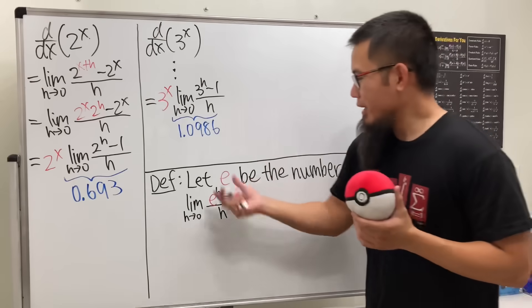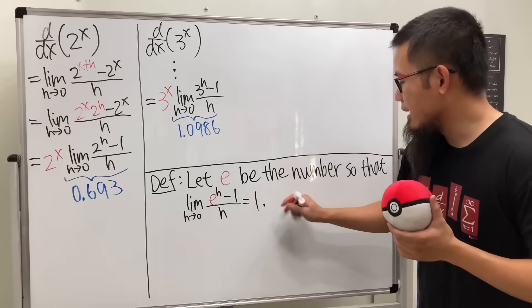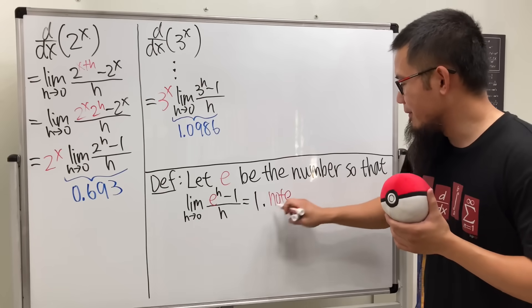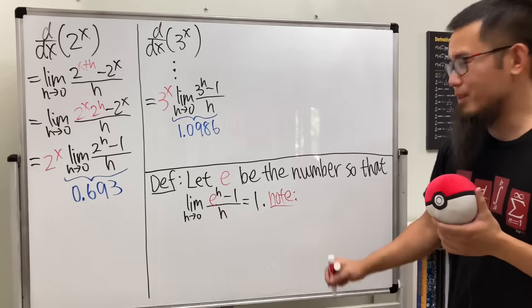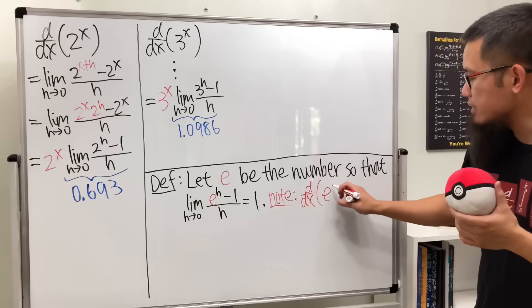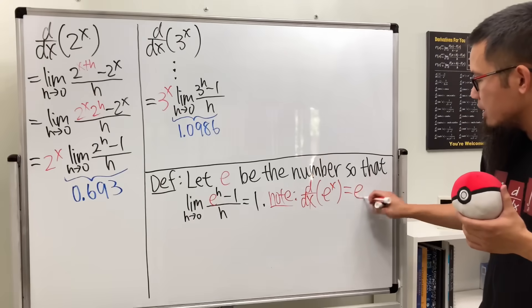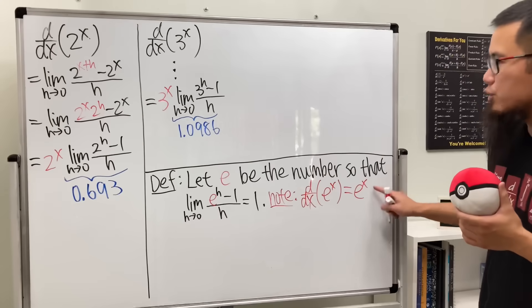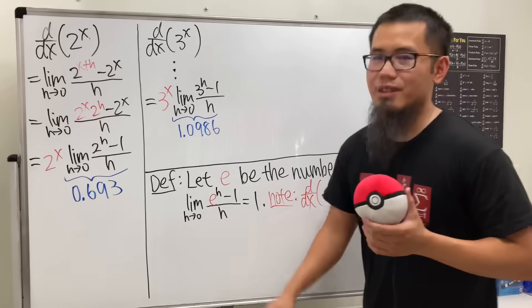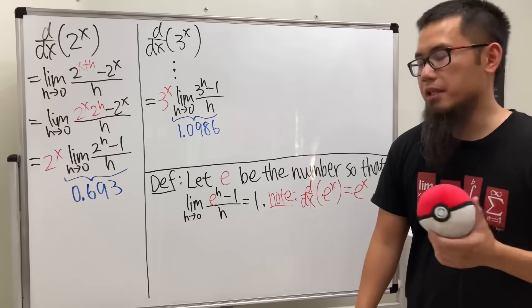So, if we can have this number e, this is going to be so wonderful, because you can see that, right? This is the thing that we'll get if we have the number e. The derivative of e to the x will just be exactly e to the x, because that extra limit will be 1, thanks to this. So, that's it, right? That's how you can define what e is.